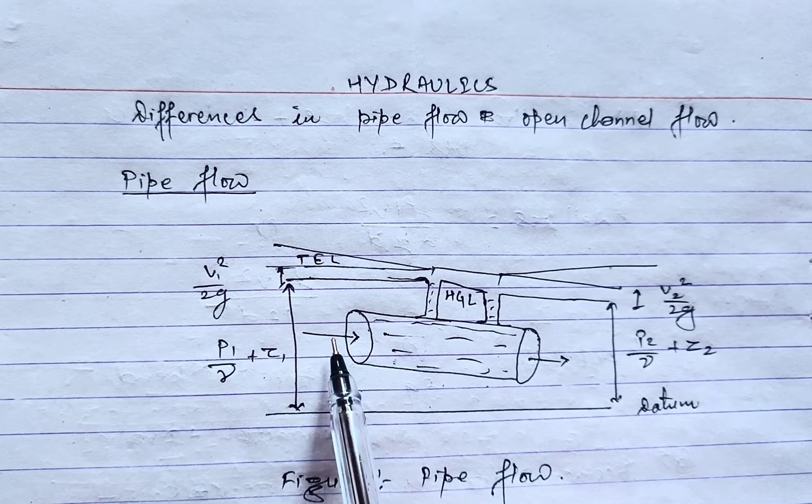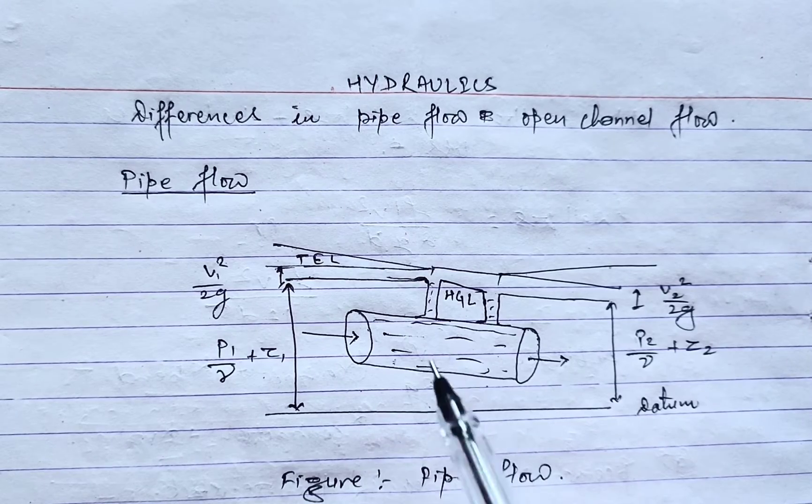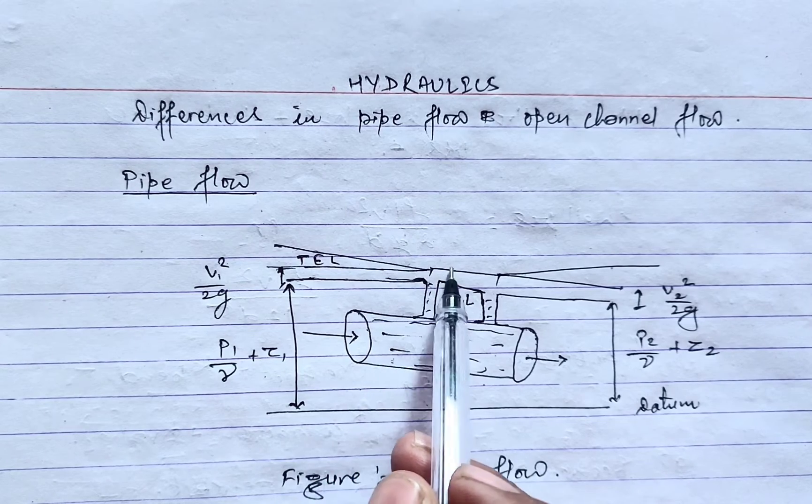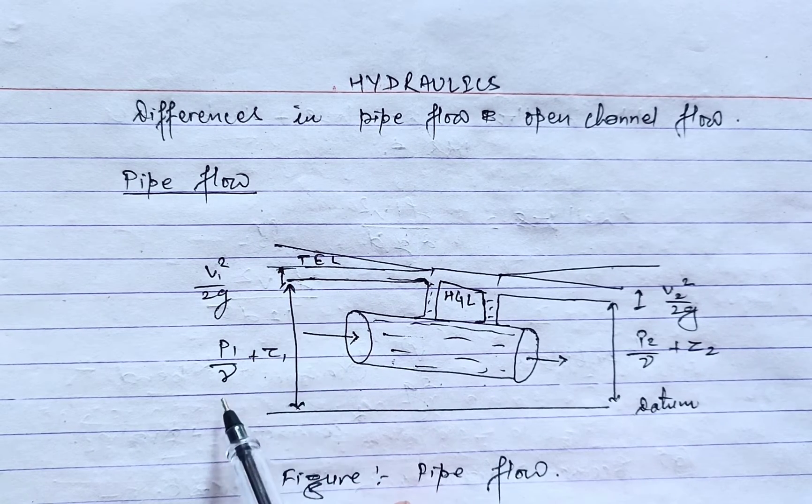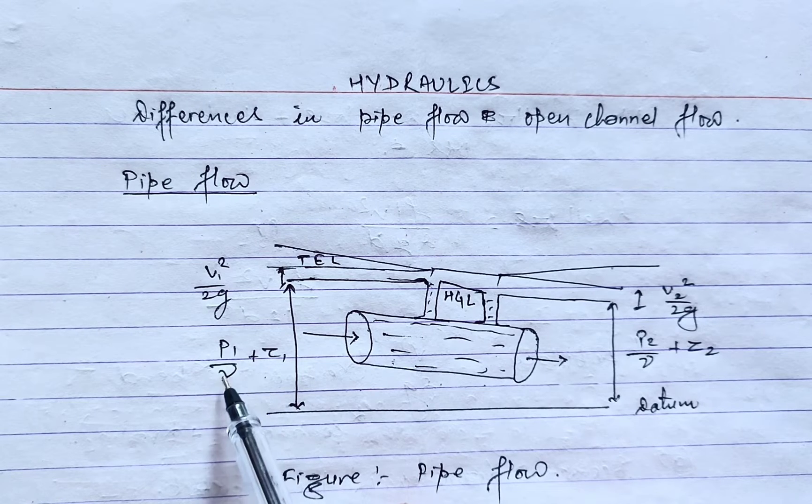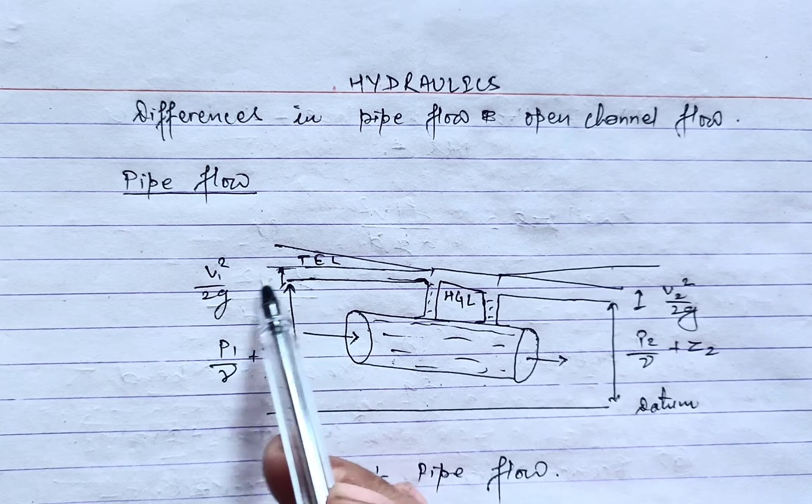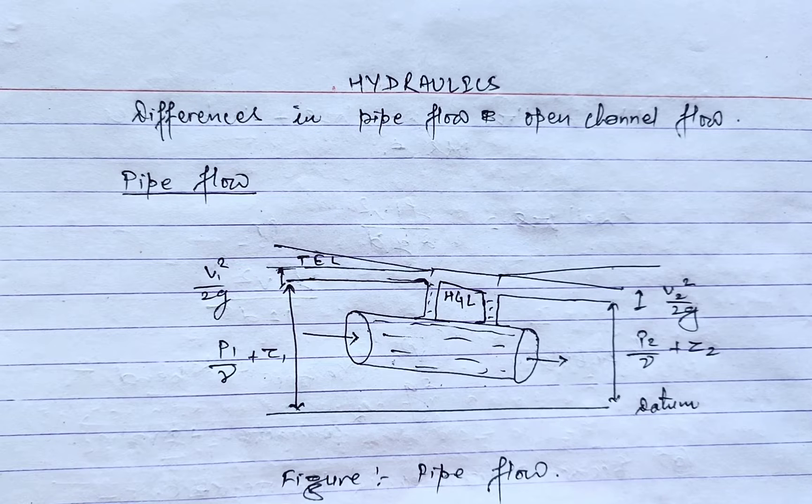Here we have shown one figure representing the pipe is full of water. You can see that this line is the hydraulic gradient line and this one is the total energy line. From the datum to the HGL line, height is given by p1 by gamma plus z1. And from HGL to TEL it's v1 squared by 2g.